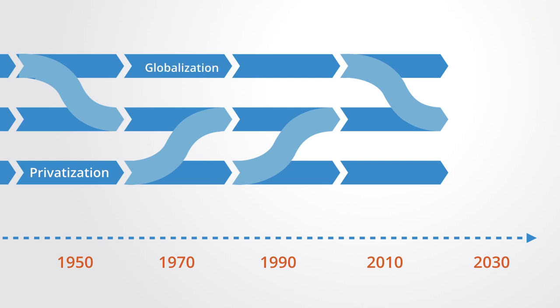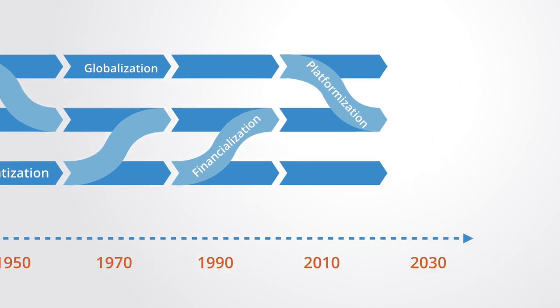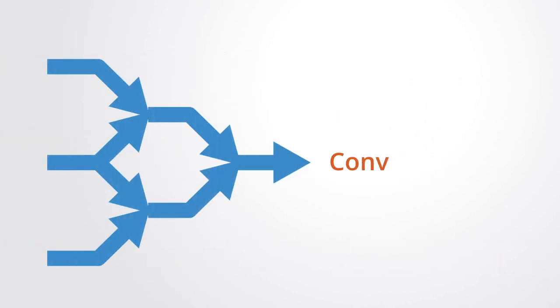Privatization and globalization, financialization, and the rise of online platforms are all converging as blockchain networks merge economics and information technology to take us into a new economic paradigm.